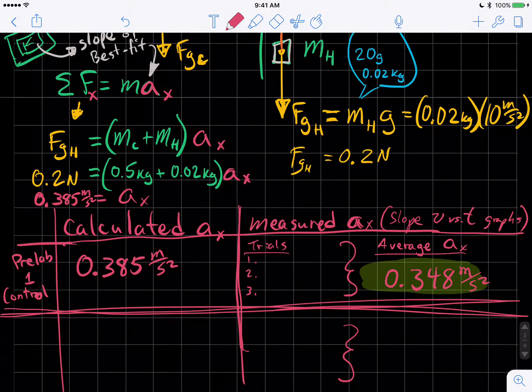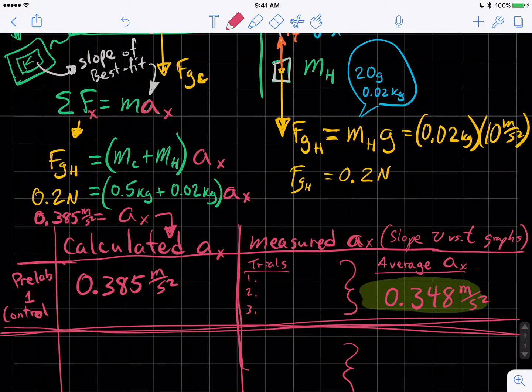So we're going to create a data table now to compare calculated accelerations. These calculated are what we have used the equation to find, and we are kind of predicting the future. We haven't even done the experiment. We've just said, hey, if we put these masses in, we're going to get this acceleration. And then we're going to actually do it and see if we get that acceleration.